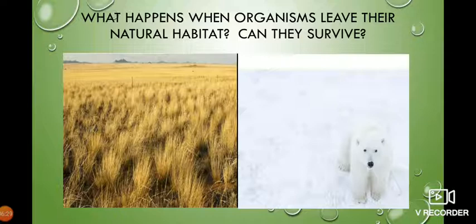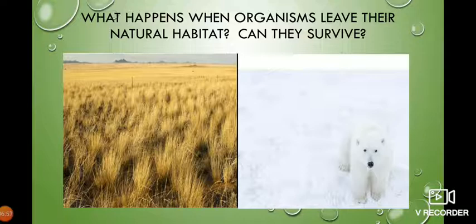First, see what happens when an organism leaves its natural habitat — can it survive? You see two pictures here: one is of a grassland habitat with a lot of grass, and the other is of a polar bear. Can you imagine a polar bear leaving all that beautiful snow and living in a grassland? No. Because its characteristics and features are suitable only for living in very cold regions; it cannot live in a hot grassland.